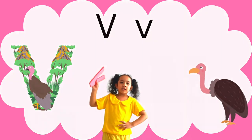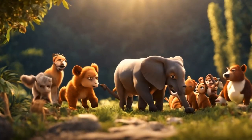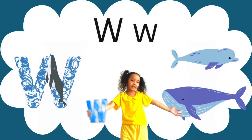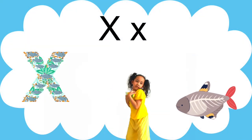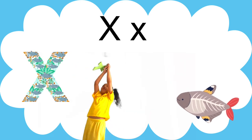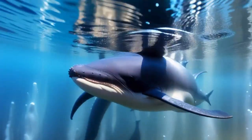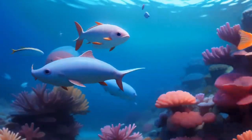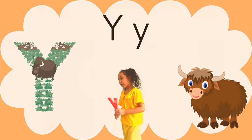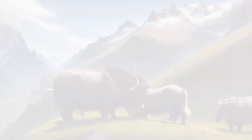Animal alphabet, learn and sing with glee. So many creatures, wild and free, come join the jamboree. Y is for yak, with a shaggy coat of hair. Z is for zebra, with stripes that are so fair.